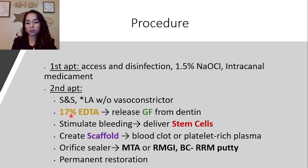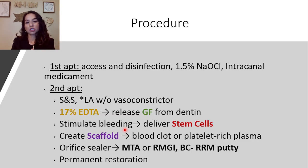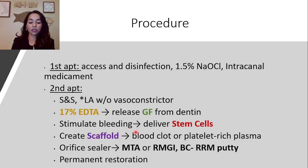Next, use 17% EDTA to release those growth factors from the dentin. Then stimulate bleeding by over-instrumenting about two millimeters past the apex, which delivers stem cells to the site of action. A scaffold can then be created — a blood clot can act as a scaffold, or platelet-rich plasma can be used.